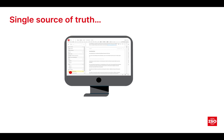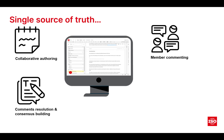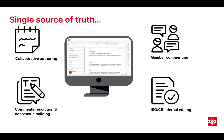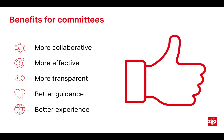Online standards development is designed to be a single source of truth where we can have collaborative authoring, member commenting, comments resolution and consensus building, as well as ISO CS internal editing all happening in the same place. It also enables technology-assisted standards development. We've integrated the stages of development into the OSD tool, with different aspects of assisted authoring during authoring stages, and we automate the directives as the document moves through the process. The goal is for committees to have a more collaborative, effective, and transparent experience, along with better guidance and an overall simpler experience for making standards.